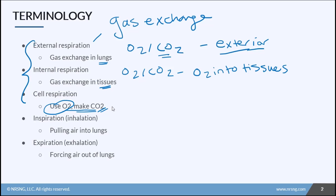All of this is one big cycle. We bring in oxygen through our lungs from the outside world, take it to the tissues and put it into the tissues and into the cells. The cells use that oxygen and make carbon dioxide. That carbon dioxide is then exchanged back out of the tissues into the bloodstream, goes to the lungs, and is exchanged in the lungs to go back to the outside world so we can get rid of it.